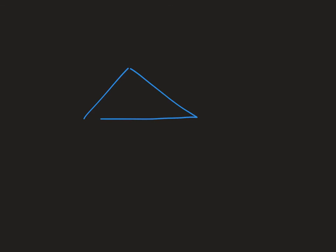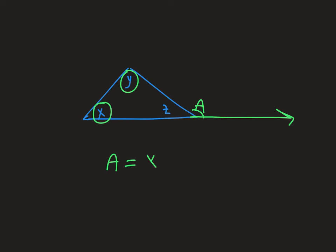Just to see the new theorem one more time: if you have a triangle with three angles and you create an exterior angle A, all it's telling you is that the exterior angle equals the sum of the two remote interior angles X and Y. It follows from the fact that X plus Y plus Z equals 180, and also A plus Z equals 180, giving you a shortcut way to find exterior angles.